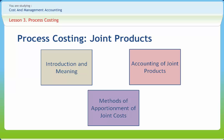Under the physical unit method, a physical base such as raw materials, volume, weight, or measures are considered for the apportionment of pre-separation joint cost to the joint products. Under the survey method, all important factors such as volume, selling price, and technical aspects which affect the costs are ascertained by means of extensive survey. Points of value are given to individual products for apportionment of joint costs before separation, and these ratios are subject to production and sales.